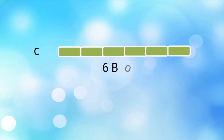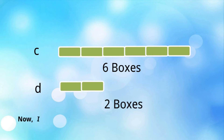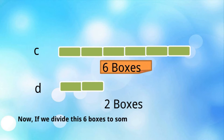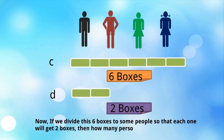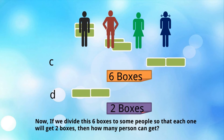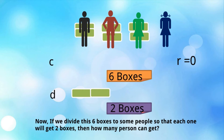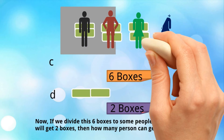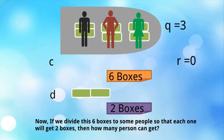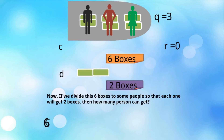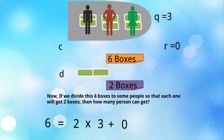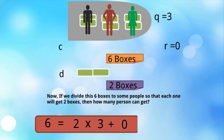Let's understand with a box analogy. Let c = 6 boxes and d = 2 boxes. If we divide 6 boxes among people so that each person gets 2 boxes, then one person gets 2, another gets 2, and another gets 2 — no boxes are left over. So r = 0, and q = 3 (three persons got the boxes). From Euclid's Division Lemma: c = dq + r, which gives 6 = 2 × 3 + 0.